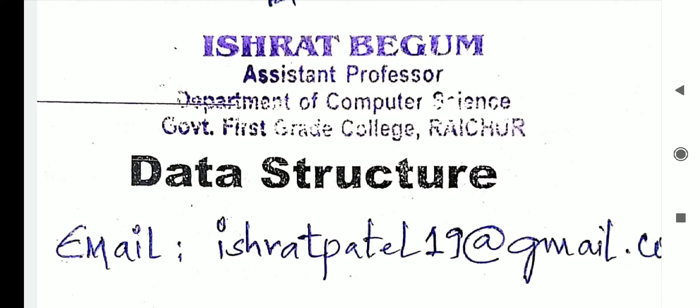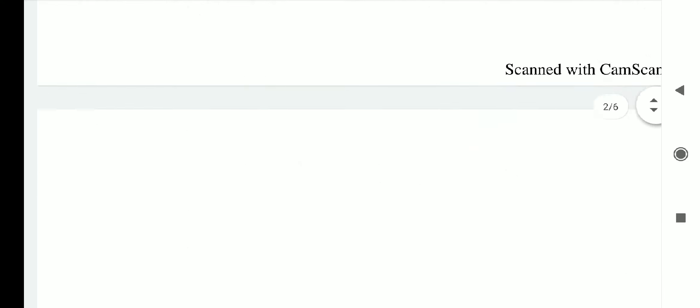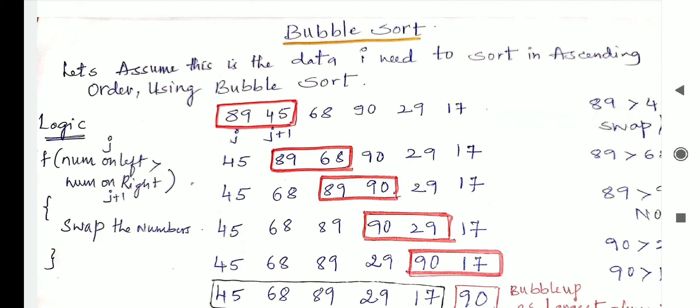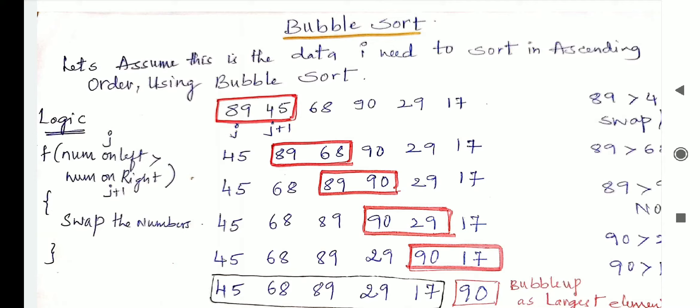Hello dear students. In today's class we shall start the sorting concept. As we all know, sorting is nothing but arrangement of data items either in ascending or descending order. We shall start with the first technique: bubble sort. There are many different techniques in this concept and we will see them one by one. Bubble sort is a very easy sorting technique and we will see its complexity as well. Let us assume a dataset with 6 items: 89, 45, 68, 90, 29.